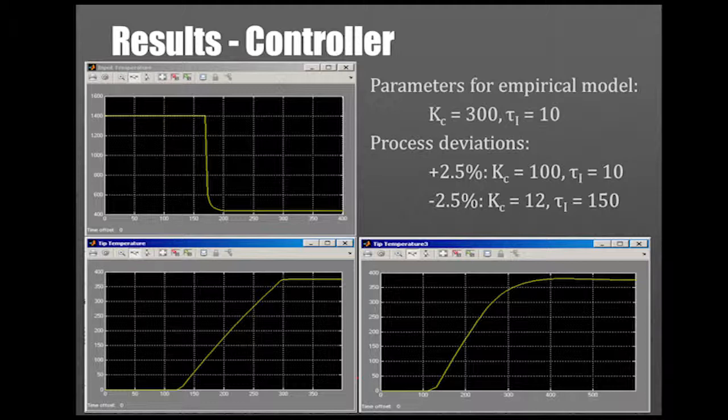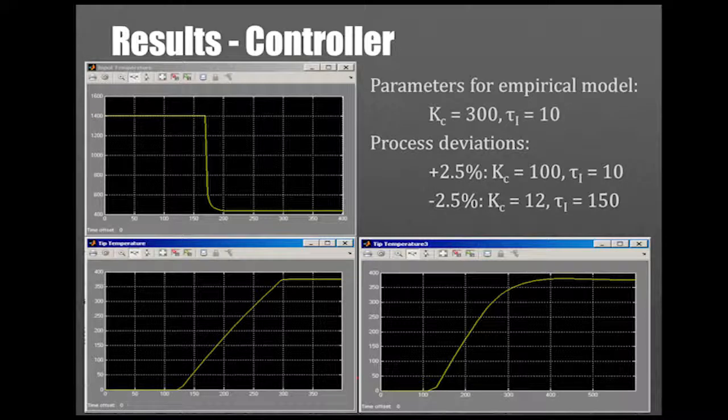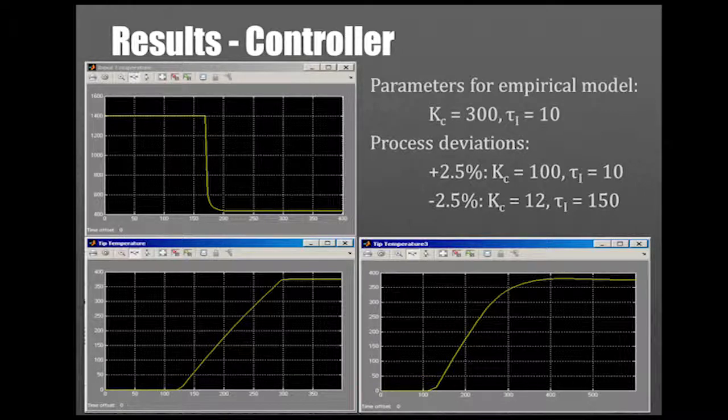Plus 2.5% was pretty close to our regular empirical data with a gain of 100 and tau i of 10. But under by 2.5% gave us a gain of 12 and a tau i of 150, so quite a big difference there. That bottom right graph shows how our controller controls the tip temperature for that minus 2.5% deviation.